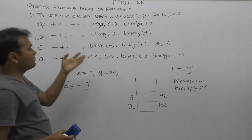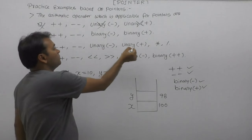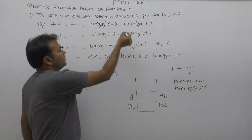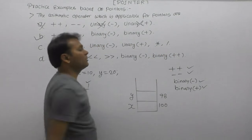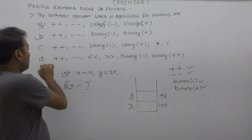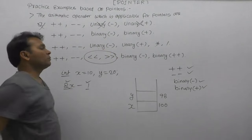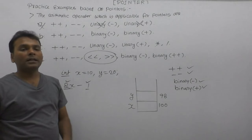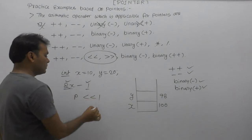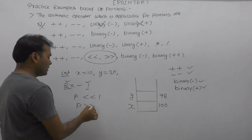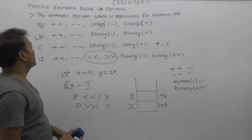Option C is incorrect because unary plus and minus are already discussed as invalid. Pointer multiplication or division is also not possible. Option D is also incorrect — shifting pointers is not allowed. You cannot perform left shift or right shift on a pointer address, so those are invalid operations. Therefore the correct option is B.